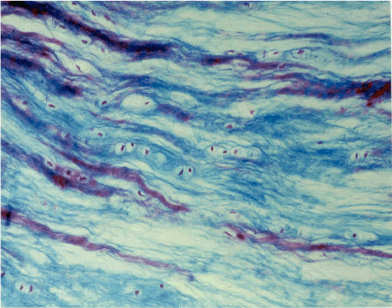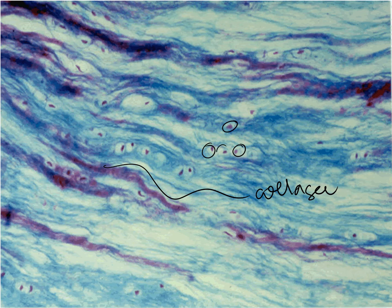Another view of fibrocartilage shows waves of collagen fibers with chondrocytes embedded in their lacunae throughout the matrix.